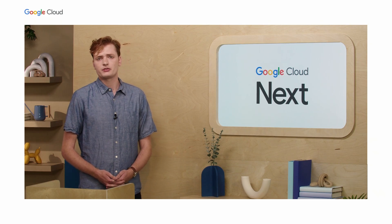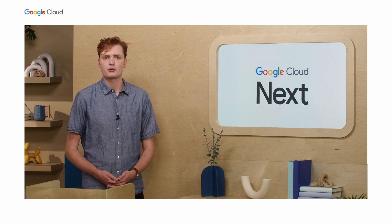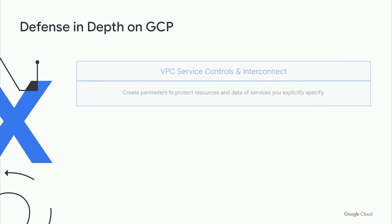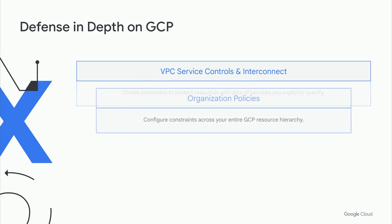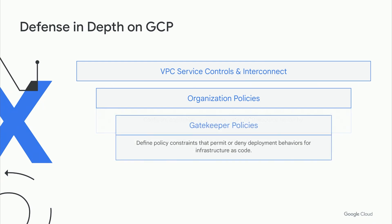The first layer is VPC service controls and a dedicated interconnect to secure our network. This means all of our traffic from on-premises is not traveling over the open internet. Through VPC-SC, we maintain a perimeter for the organization and restrict access to projects and resources to Goldman Sachs IP addresses only. The next layer is organization policies, applied to any infrastructure deployed within any of our GCP projects. Next is gatekeeper policies — a series of checks that run against our infrastructure as code files. If a user has misconfigured a resource, these policies prevent it from even being deployed.